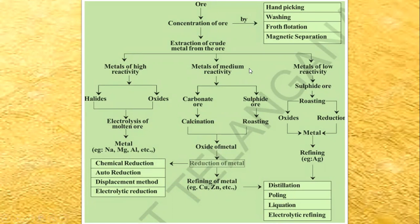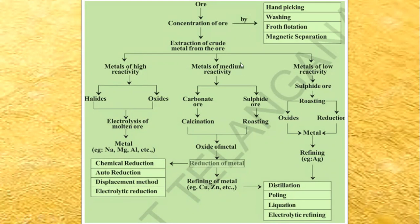Today we are going to learn the extraction of metals of low reactivity. Metals of low reactivity are available in nature in the form of sulfide ores. If they are not already in oxide form, they are first converted into oxides, then they are reduced to the metals. Like all other metals, these metals also have to be purified — that is, they go through a refining stage.